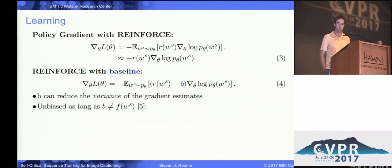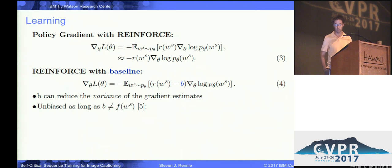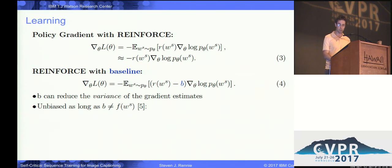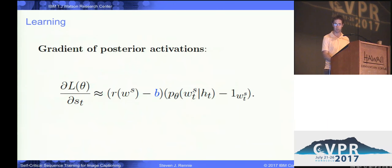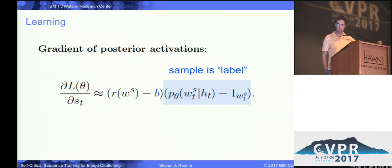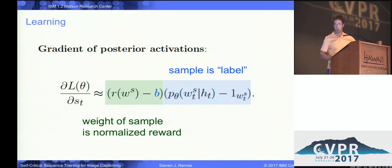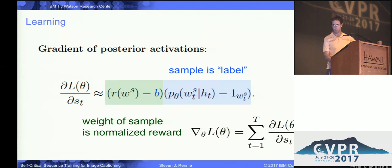The problem with this technique is it tends to have high variance. As has been shown on several problems over the last several years, having a baseline can really improve the situation. The baseline can reduce the variance of the gradients, and it's unbiased as long as it's not a function of the token — in this case, the word that you've sampled. A constant comes out of the sum because it's independent of the word sampled, so the technique is unbiased. The gradient of the posterior activations of the softmax function shows that the sample is treated as the label and is re-weighted by the normalized reward.